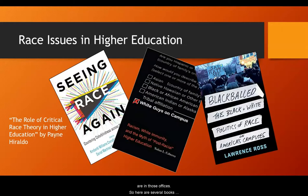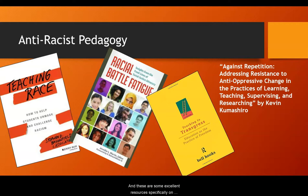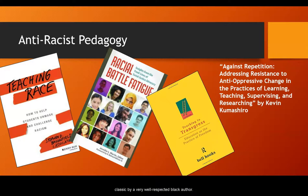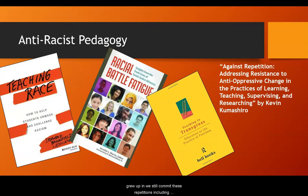Here are several books and one article about race issues in higher education, and some excellent resources specifically on teaching race in higher education classrooms. The first two books are written by a variety of authors with various identities looking at different aspects of teaching. Teaching to Transgress is a classic by a very well-respected Black author. Kevin Kumashiro wrote a very interesting article about how no matter how dedicated we are to anti-racist and just pedagogy, because of the society we grew up in, we still commit to these repetitions — including against groups with whom we personally identify — but he has suggestions for how we can continue to improve over time.